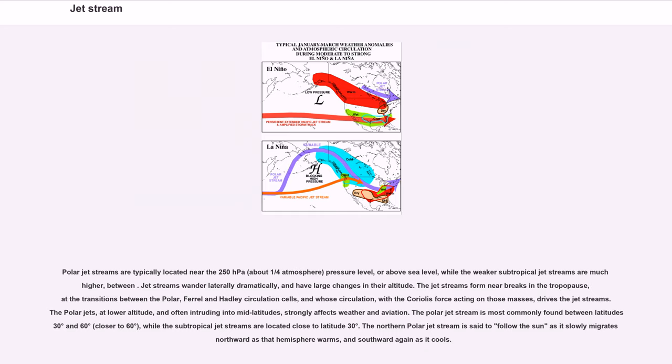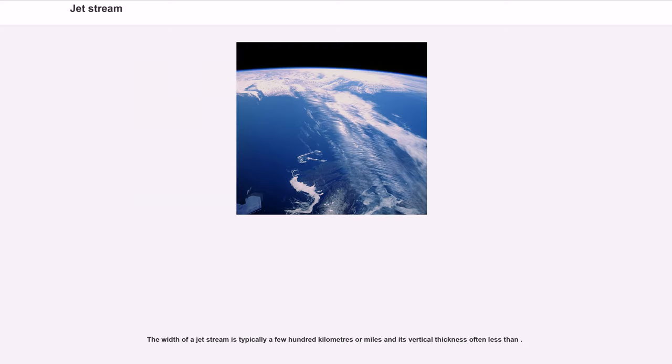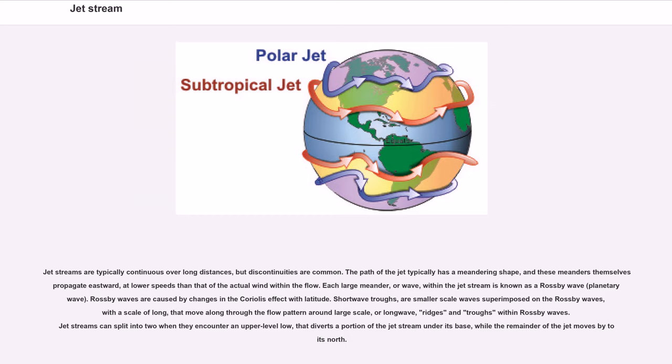The polar jets, at lower altitude, and often intruding into mid-latitudes, strongly affect weather and aviation. The polar jet stream is most commonly found between latitudes 30 degrees and 60 degrees, closer to 60 degrees, while the subtropical jet streams are located close to latitude 30 degrees. The northern polar jet stream is said to follow the sun as it slowly migrates northward as that hemisphere warms, and southward again as it cools. The width of a jet stream is typically a few hundred kilometers and its vertical thickness often less than. The path of the jet typically has a meandering shape, and these meanders themselves propagate eastward. Each large meander, or wave, within the jet stream is known as a Rossby wave, or planetary wave.